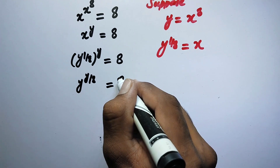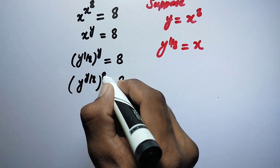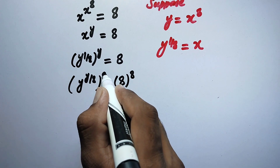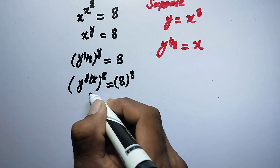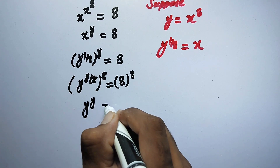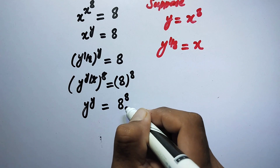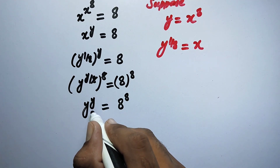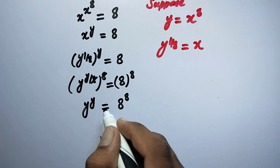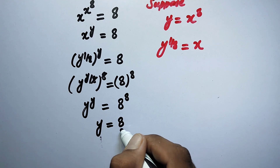We then raise both sides to the power of 8. The 8 in the denominator cancels out, leaving us with y to the power of y equals 8 to the power of 8. By comparing both sides of the equation, we can directly see that y equals 8.